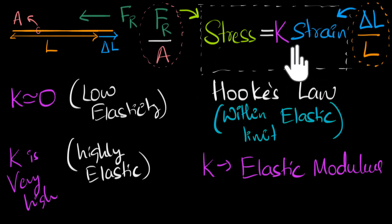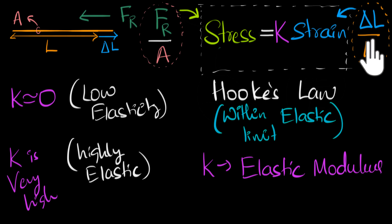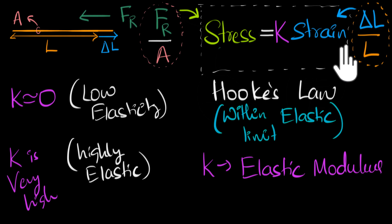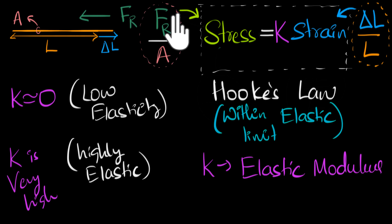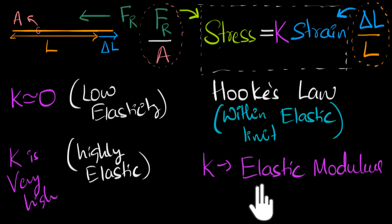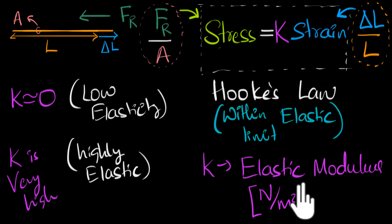What are the units of K? Since strain has no units — because it's length per length, so centimeters cancel — K should have the same units as stress. Stress has units of newtons per meter squared, so K will also have units of newtons per meter squared.